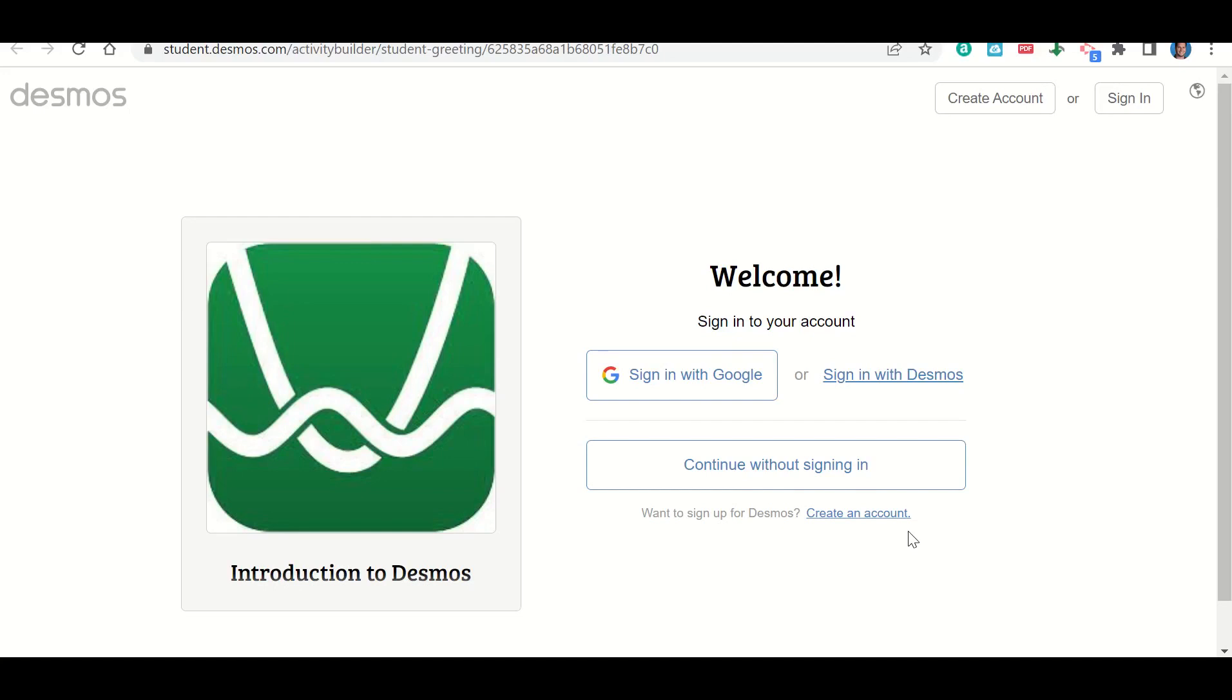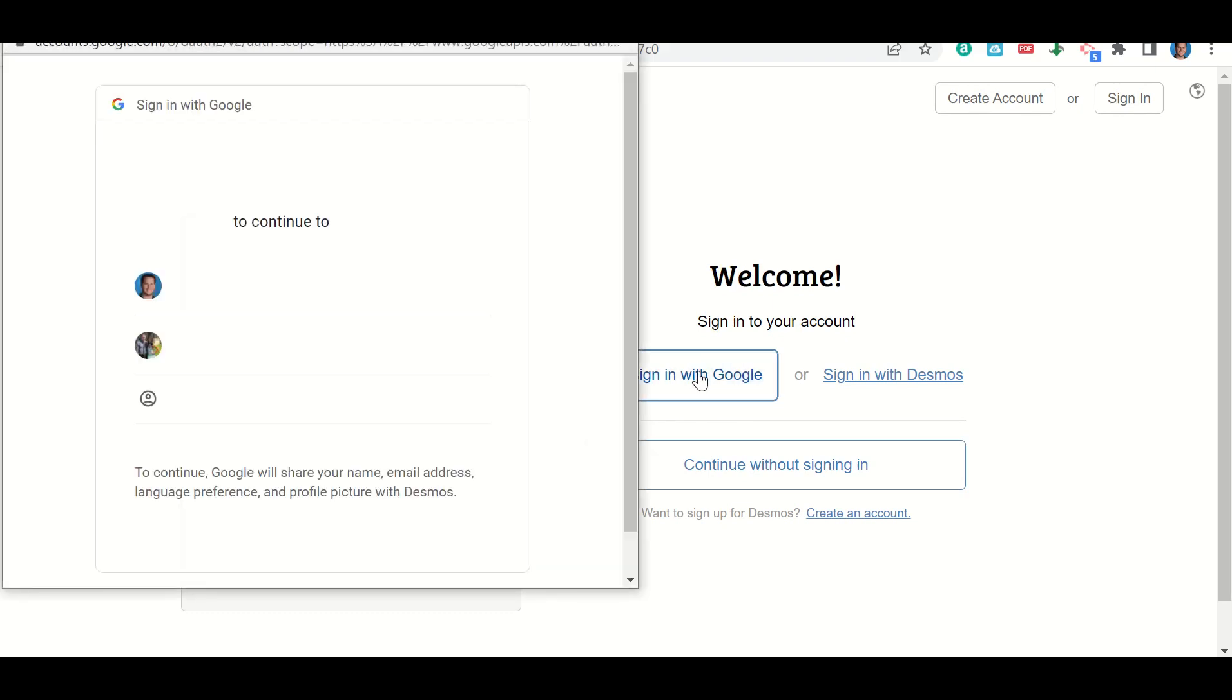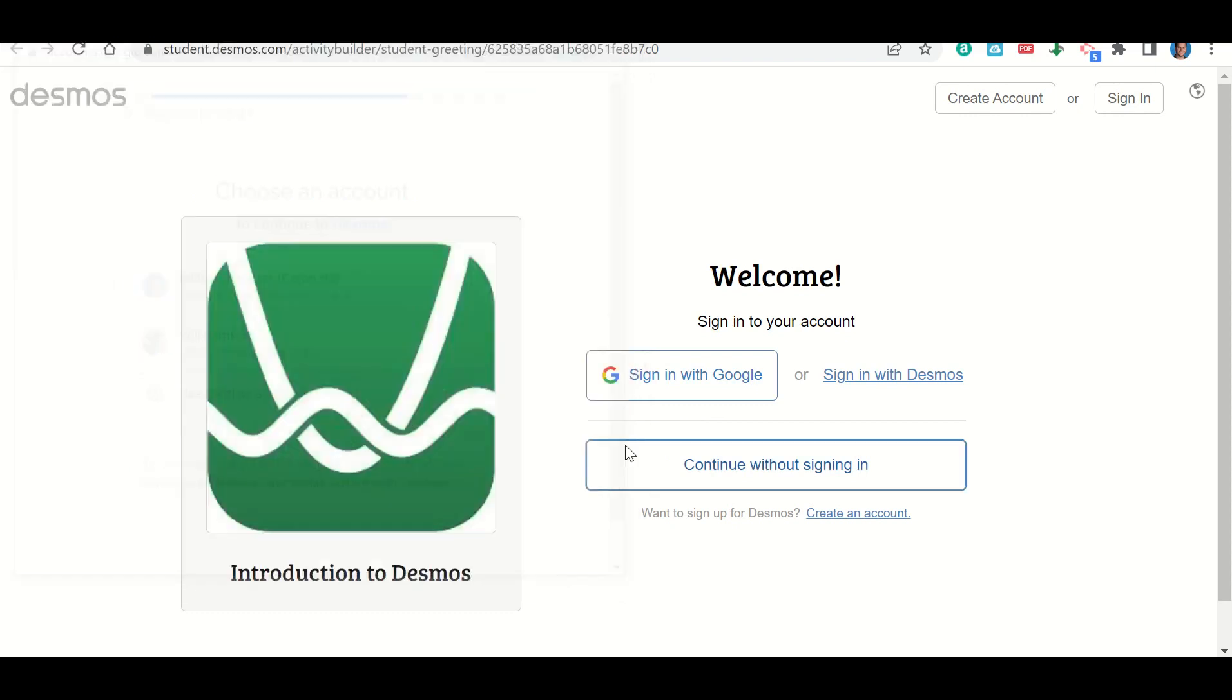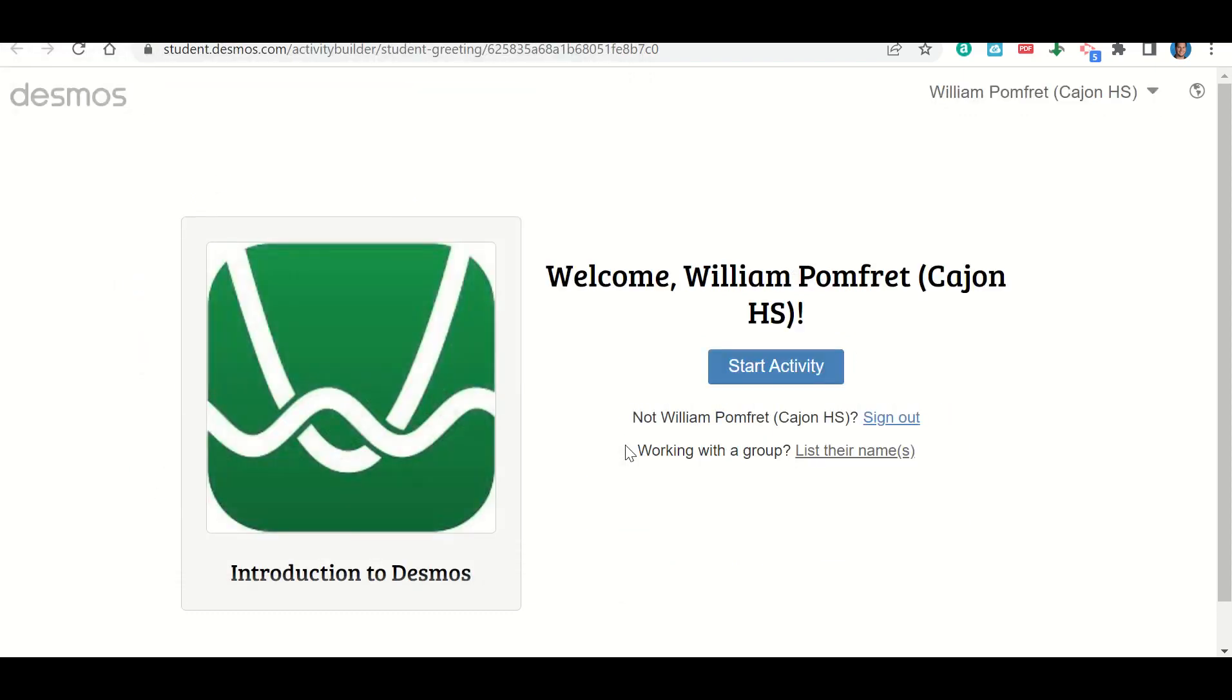Let's talk now about how to sign in to Desmos to complete your work. You're going to click on the link to go to the assignment, and it should take you to a page that looks kind of like this. Right here where it says sign in with Google, we're going to click there. It's going to pop up with our email accounts. You're going to click on your school email account, and it should already have you logged in. From there, I'm just going to click start the activity. That's how you will log in to Desmos using Google.